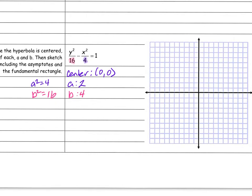Make sure you get that part correct. Now I'm going to graph: I'll draw my fundamental rectangle. My center is at zero zero, a is side to side so I mark two in each direction, and b is up and down — one, two, three, four — so my rectangle contains those four points. There's my fundamental rectangle right there.